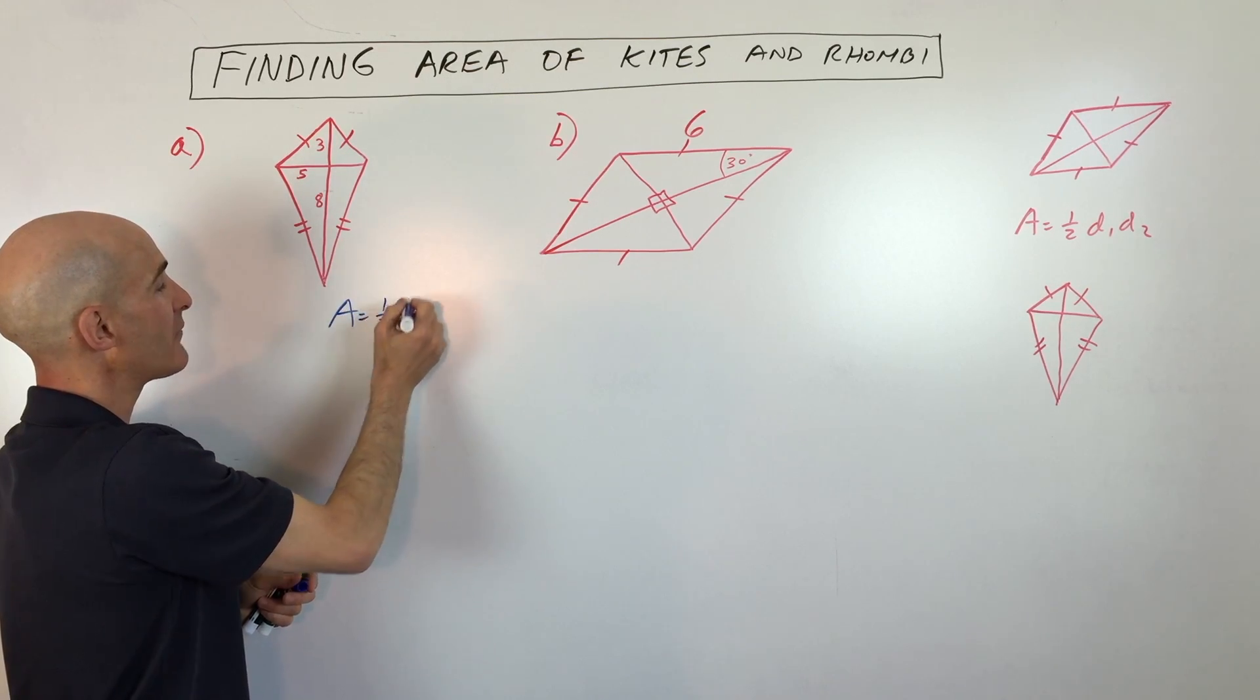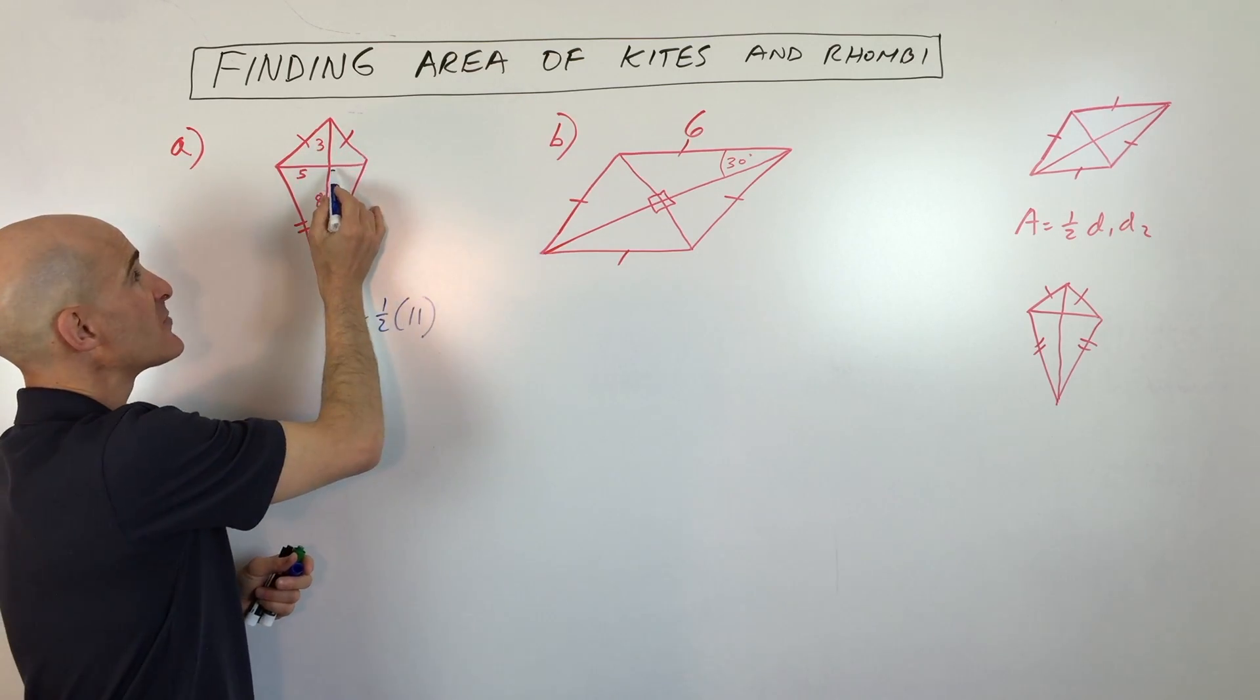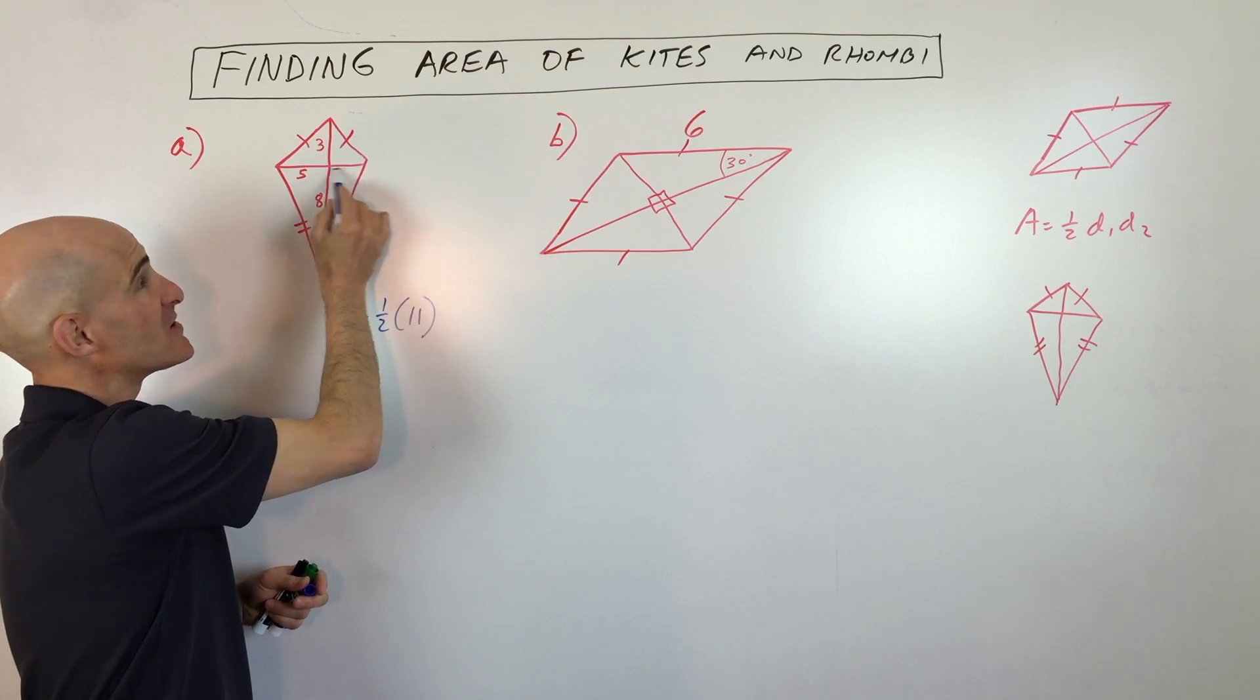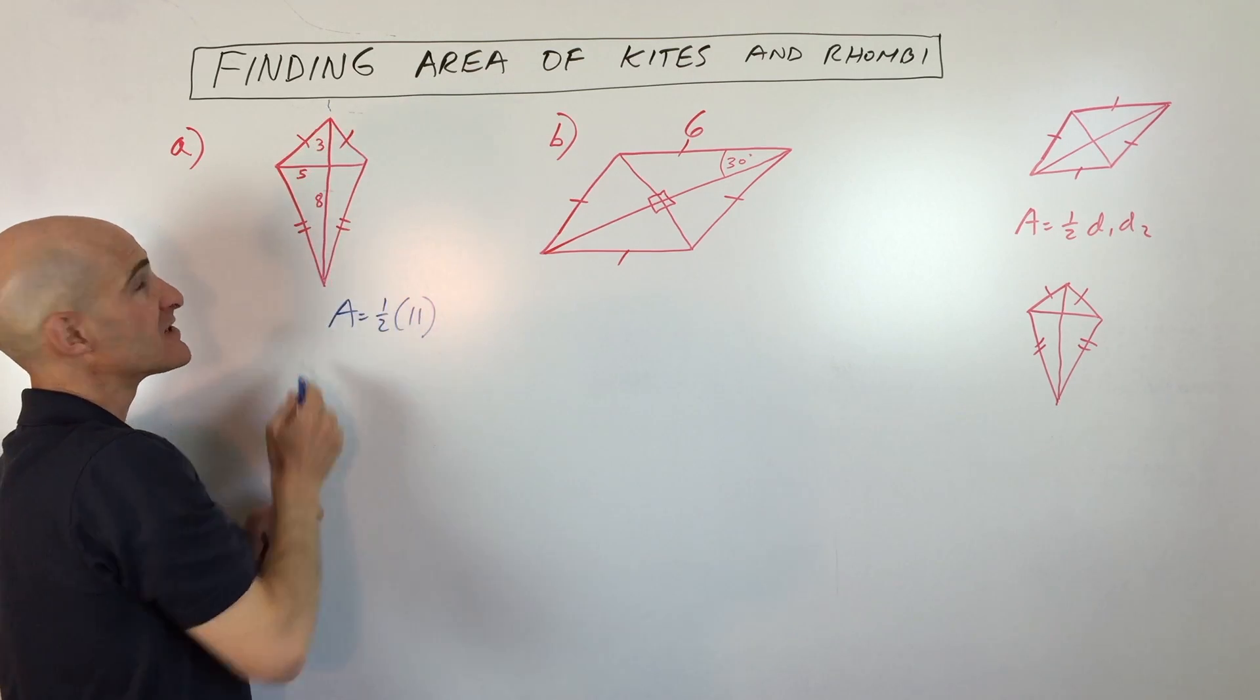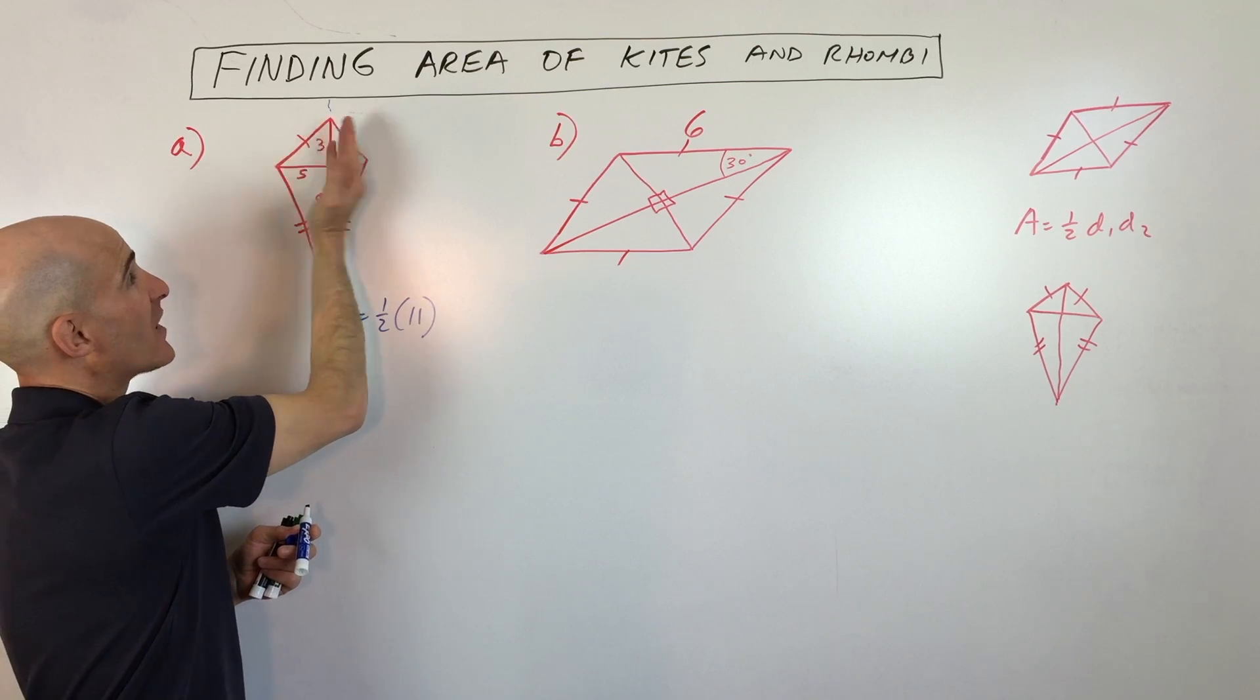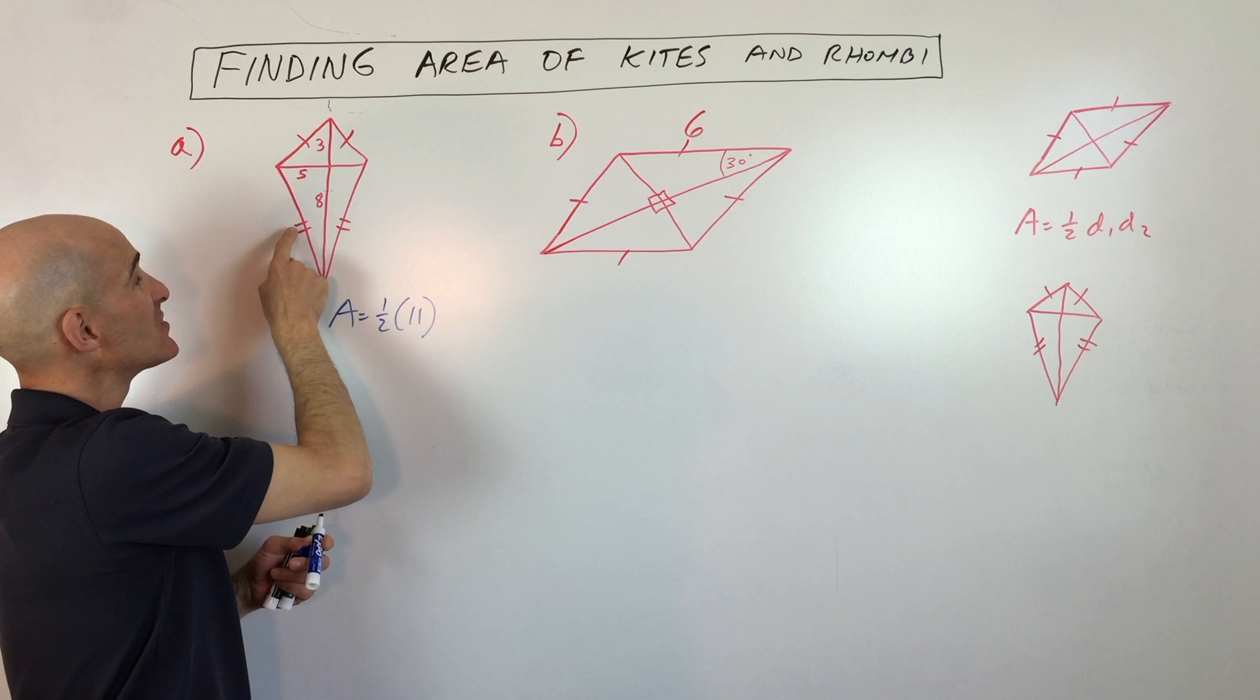So the area is going to be one half times eleven times this diagonal. Now you might be saying, Mario, we don't know this piece right here, right? Well in a kite this diagonal right here is a line of symmetry. So if you fold the kite like this, this angle matches with this angle, this matches with this.